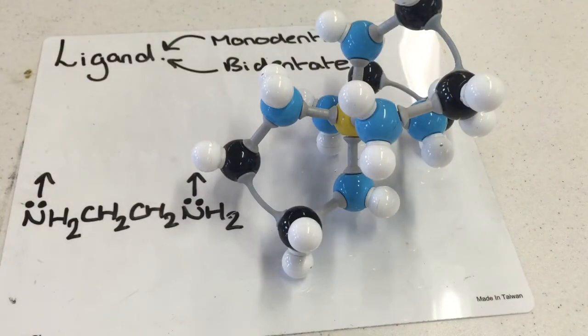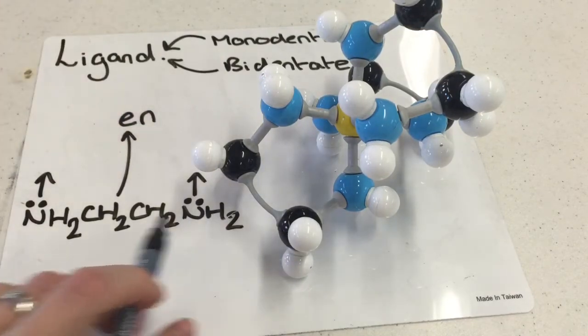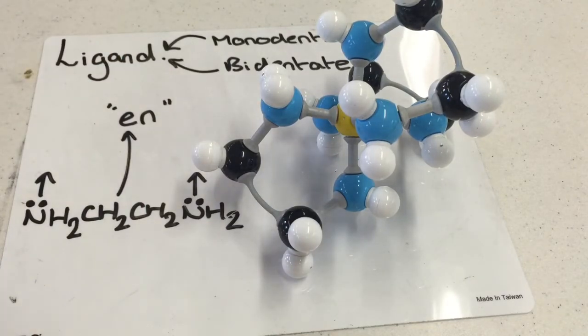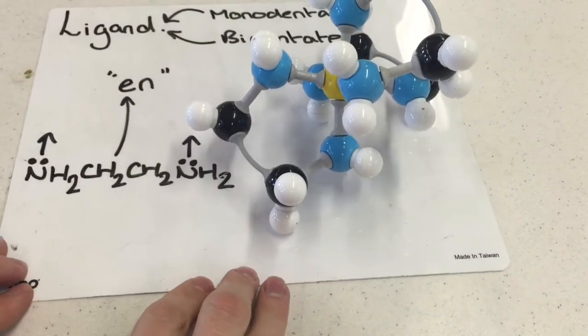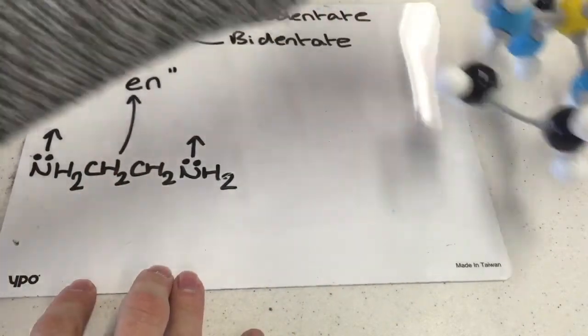Its formula though would be written differently. Now often in the exam, they will let you shorthand this entire structure to just en, but only do that if they let you do it, or if they mention it in the question. They often say you can abbreviate this structure to en.